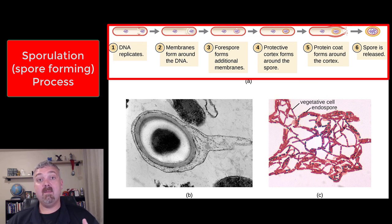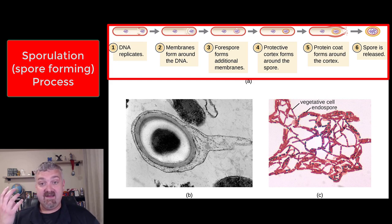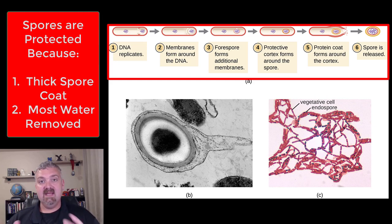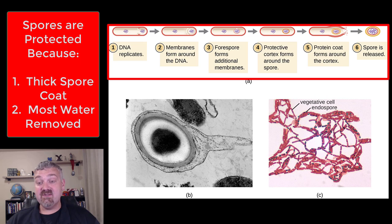In the sporulation process, the organism makes a copy of its DNA just like it would if it was dividing. A membrane forms around that DNA — it's almost like a second cell forming inside the first cell. Then you have the forespore, then the cortex forming around it, and then step five is key: layers and layers of protein. This protein is designed to resist radiation, heat, and all manner of things. The big thick protein coat combined with dehydration are the two things that shut off its metabolism but also protect it from the environment, and then out shoots a spore.